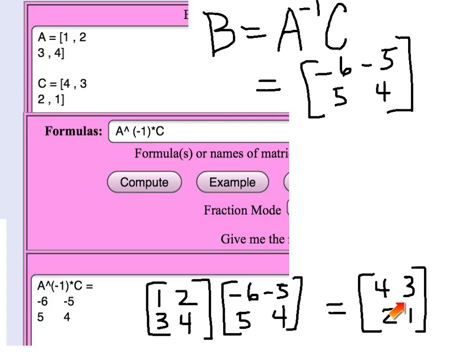So we've just checked to verify that indeed this matrix B, which we have determined here, is indeed the correct answer to the question of what is the mystery matrix which multiplied on the right times A gives us C.